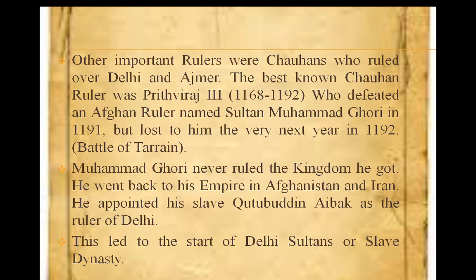As we are learning about bigger empires and royal families, we have learnt about Palas, Rashtrakutas, and Gurjara Pratiharas. Now let's learn about a special royal family — the Chauhans. Chauhans ruled the northern part of India at that time and had many great kings. We will focus on one king: Prithviraj Chauhan III.